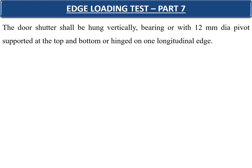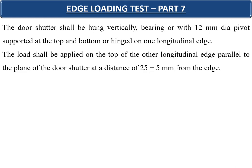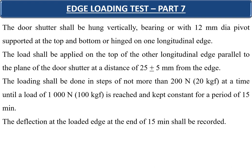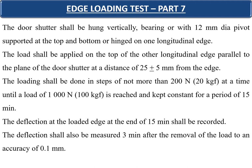Part 7 covers the edge loading test. The door shutters shall be hung vertically with a 12 mm diameter pivot at top and bottom or hinged on one longitudinal edge. Load shall be applied on the top of the other longitudinal edge parallel to the plane of the door shutter at a distance of 25 ± 5 mm from the edge, in steps of not more than 200 newtons up to 1000 newtons, held for 15 minutes. Deflection is recorded at the end of 15 minutes and 3 minutes after load removal, to 0.1 mm accuracy.